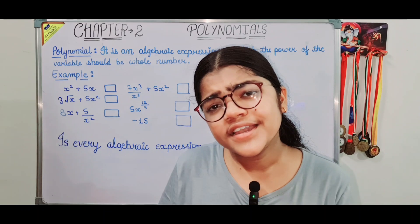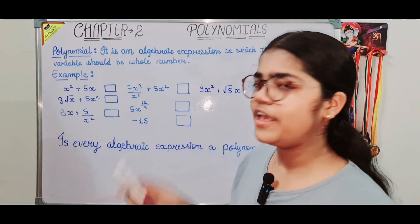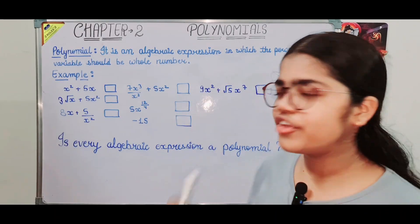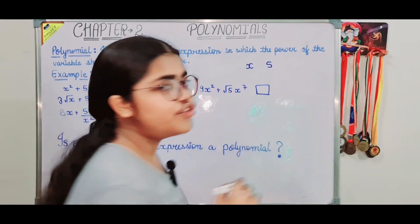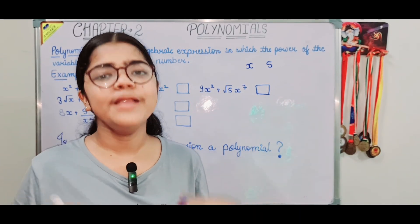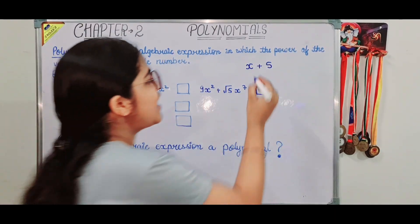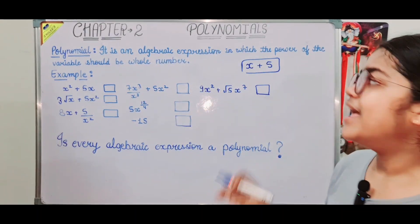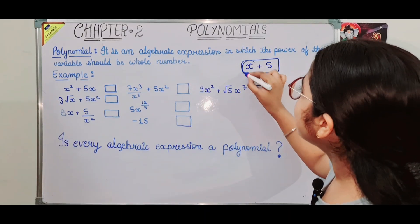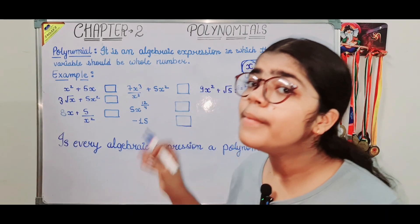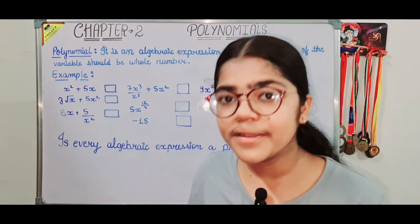What is a variable? A variable is a value that varies — it is not fixed. It can be a, b, c, d. What is a constant? A constant is a value that is fixed, like 1, 2, 3, 4. So a combination of variable x and constant 5, joined with an operator like plus, gives us x plus 5 — that is an algebraic expression.